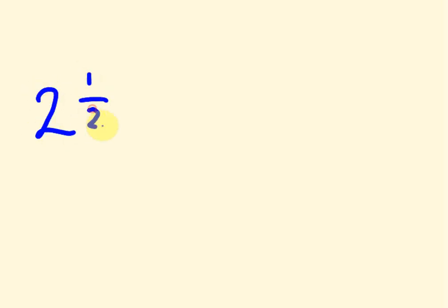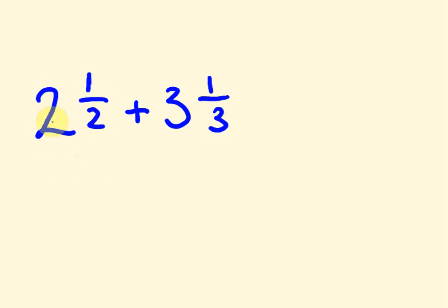An example I'll do here is two and a half added to three and one third. Now the way that we do this is first off, if we have a mixed number we have to turn it into what is known as an improper fraction. An improper fraction is where we have a fraction with a bigger number on top and a smaller number on the bottom. And the easiest way to do that is this.